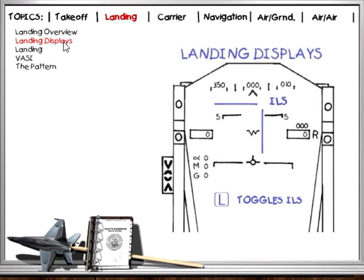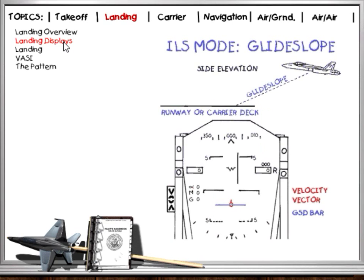The ILS aids you in landing the aircraft under any condition. The ILS is displayed as two needles on the HUD. The GSD is the horizontal needle indicating the position of the glide slope. Glide slope is an imaginary horizontal path originating from the touchdown aim point on the runway out to the point the final approach starts. If you are on glide slope, the GSD will cross the velocity vector in the center.